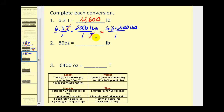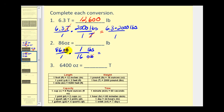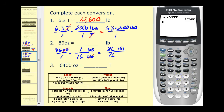On number two, we're converting ounces to pounds. Write eighty-six ounces over one. We have sixteen ounces equals one pound. For our unit fraction, we want ounces in the denominator and pounds in the numerator, because we want the ounces to simplify out. The conversion is one pound equals sixteen ounces, so one pound in the numerator and sixteen ounces in the denominator. Our numerator is eighty-six pounds and our denominator is sixteen. Eighty-six divided by sixteen gives us five point three seven five pounds.